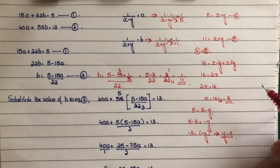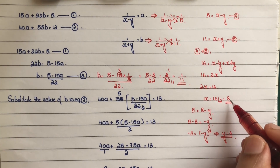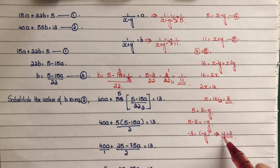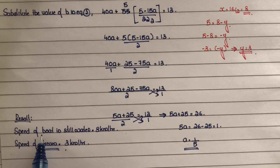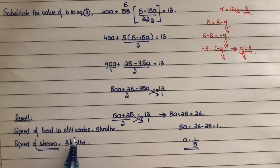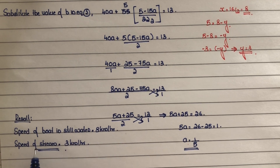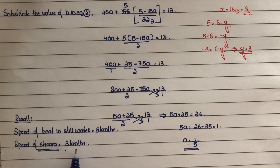Therefore, the speed of the boat in still water is x equals 8 km per hour and the speed of the stream is y equals 3 km per hour.